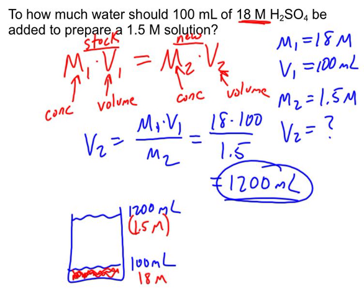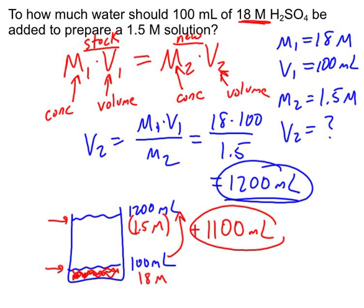Still not something we want to get on our skin. But anyway, our new total volume is 1,200, but we already had 100 milliliters in there to begin with. So to get this to 1,200, we only need to add 1,100 milliliters of water. So that will be our actual answer here, not 12. So you're just going to be careful with that.